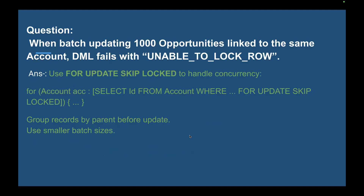When a batch is updating 1000 Opportunities linked to the same account and a DML fails with 'unable to lock row', the answer is to use the FOR UPDATE keyword in your SOQL query to handle concurrency. Inside the loop, query with SELECT Id FROM Account WHERE ... FOR UPDATE to skip lock contention. Also group by parent before updating and use a similar batch size.